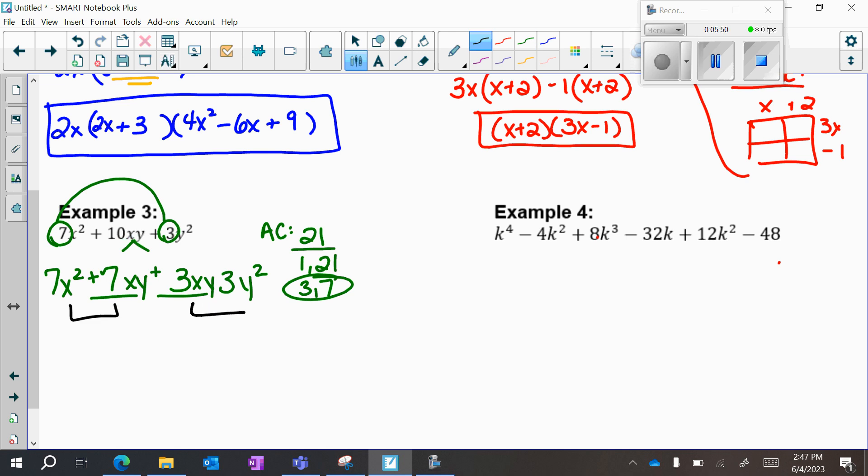In my first two terms, a 7x is the GCF, so I'm left with x plus y. In the next two terms, 3y is my GCF, I'm left with x plus y. My binomials are the same, so I have x plus y times 7x plus 3y. So don't be intimidated when there are two variables, just apply the AC method, and it works itself out.